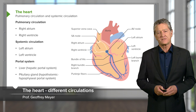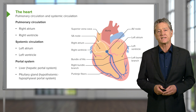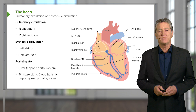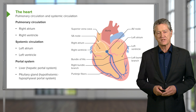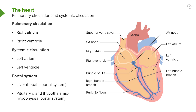First of all, let's try to understand the structure of the heart. On the right-hand side, you can see a diagram explaining the internal structure of the heart as if you are looking at a person standing in front of you. Look at this slide and try to identify firstly the left atrium and the left ventricle, both towards the right-hand side of this slide.